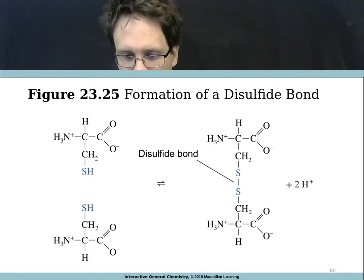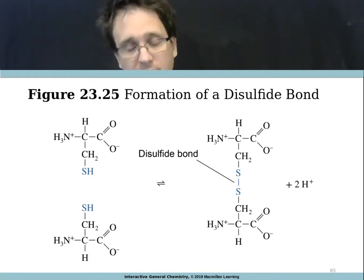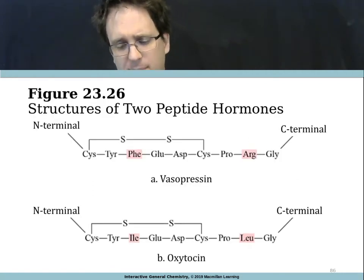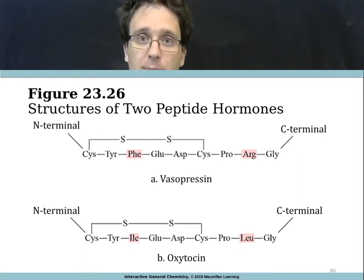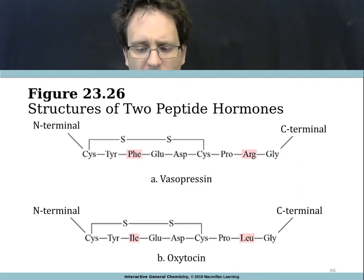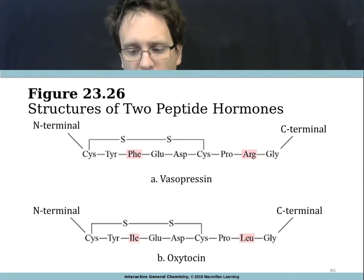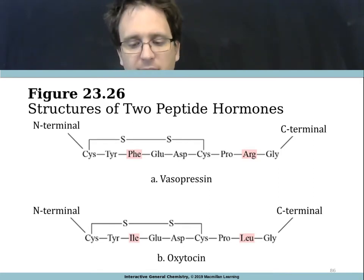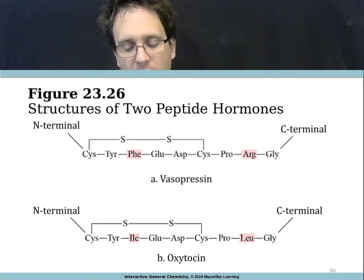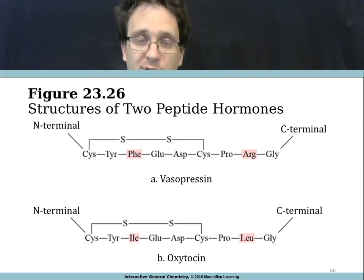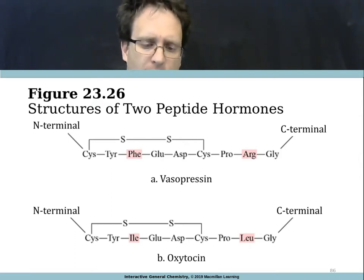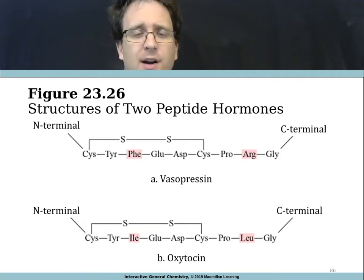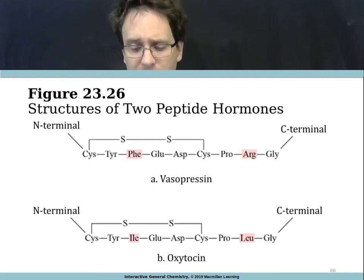An example of disulfide bonds in action: vasopressin and oxytocin are very similar peptide hormones, each only nine amino acids long, and both share a disulfide bond between two of their cysteine amino acids. It's incredible that these two hormones are so similar to each other and yet both have unique and complex functions to perform within the body.